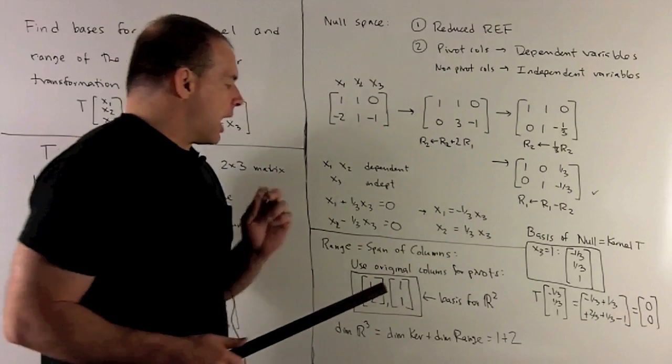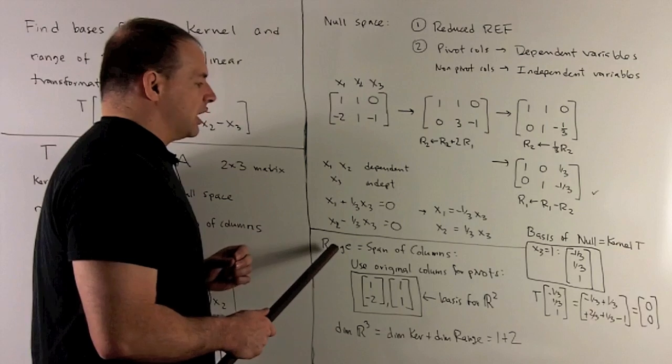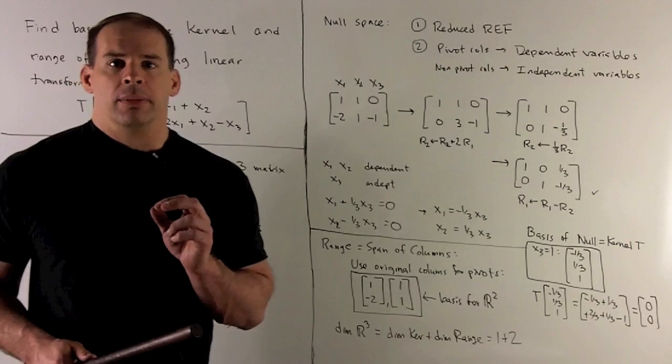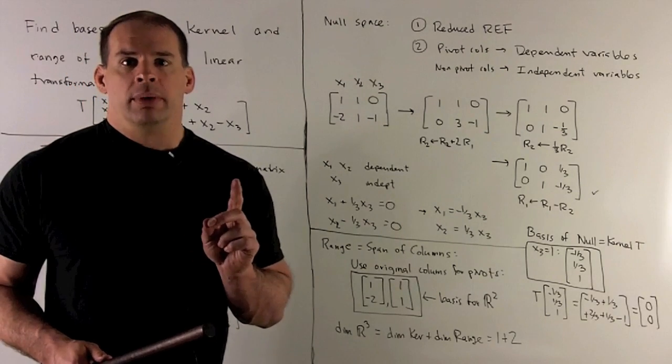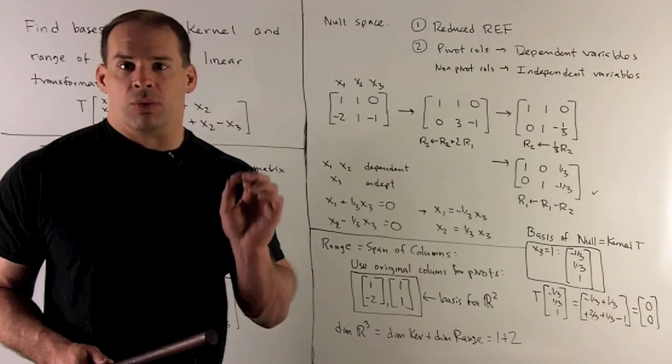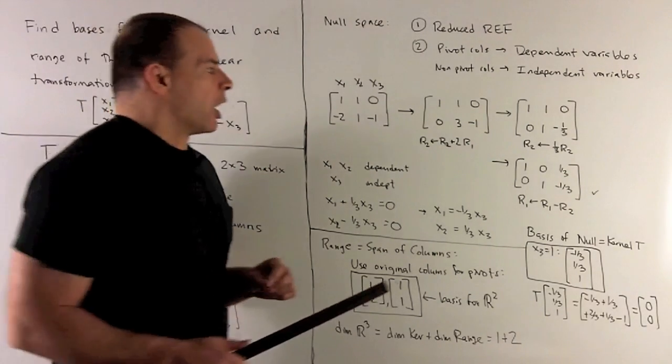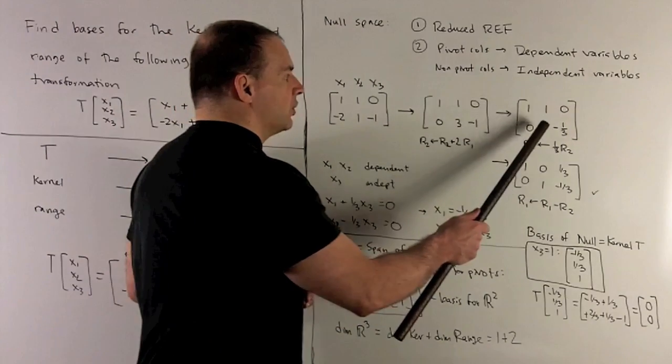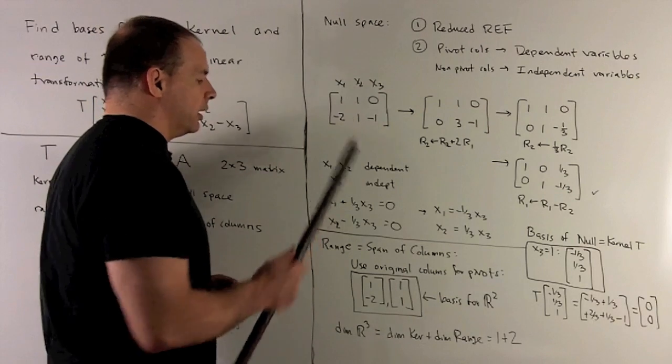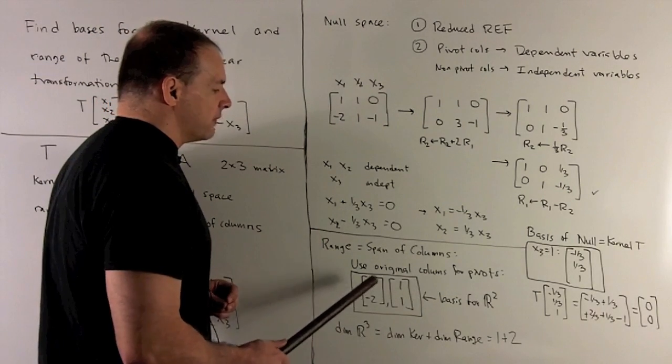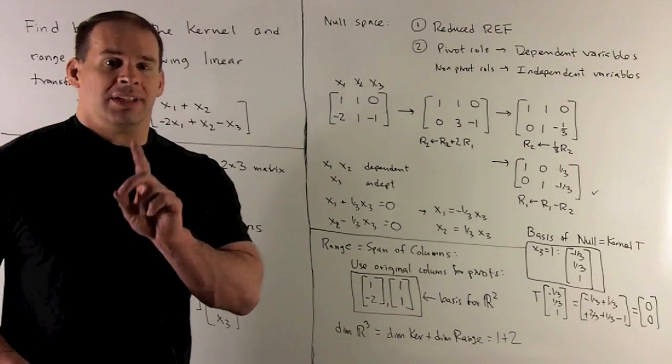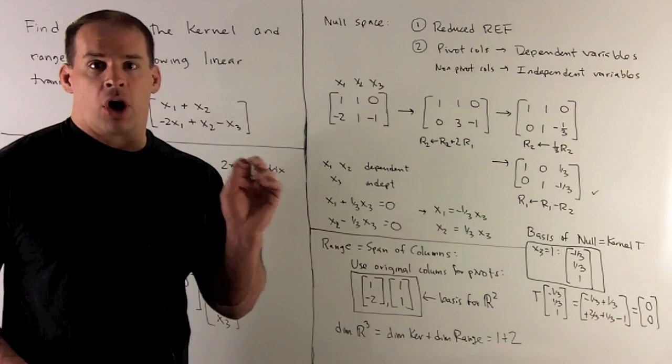Next step, I want basis for the range of T. So we're looking for a basis for the span of the columns of A. What's the rule here? Well, you only need row echelon form. You identify your pivot columns, and then you just take the corresponding columns from the original matrix. So our pivots are in columns 1 and 2. So I'm going to use the vectors 1, minus 2 and 1, 1. So that's going to be a basis for the range of T. Note that's also going to be a basis for R². So T is going to be an onto map. It hits everything in R².